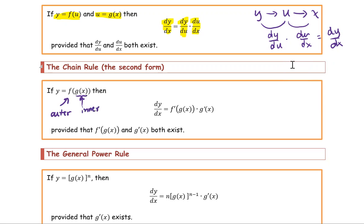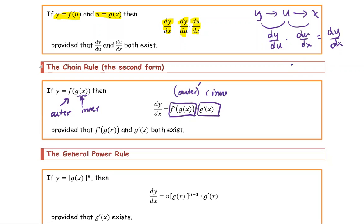You compose f with g. When you find the derivative of y with respect to x, you're going to find the derivative of the outer function multiplied by the derivative of the inner function. So I'm going to write it in this form — this part is the outer derivative and the other part is the inner derivative.